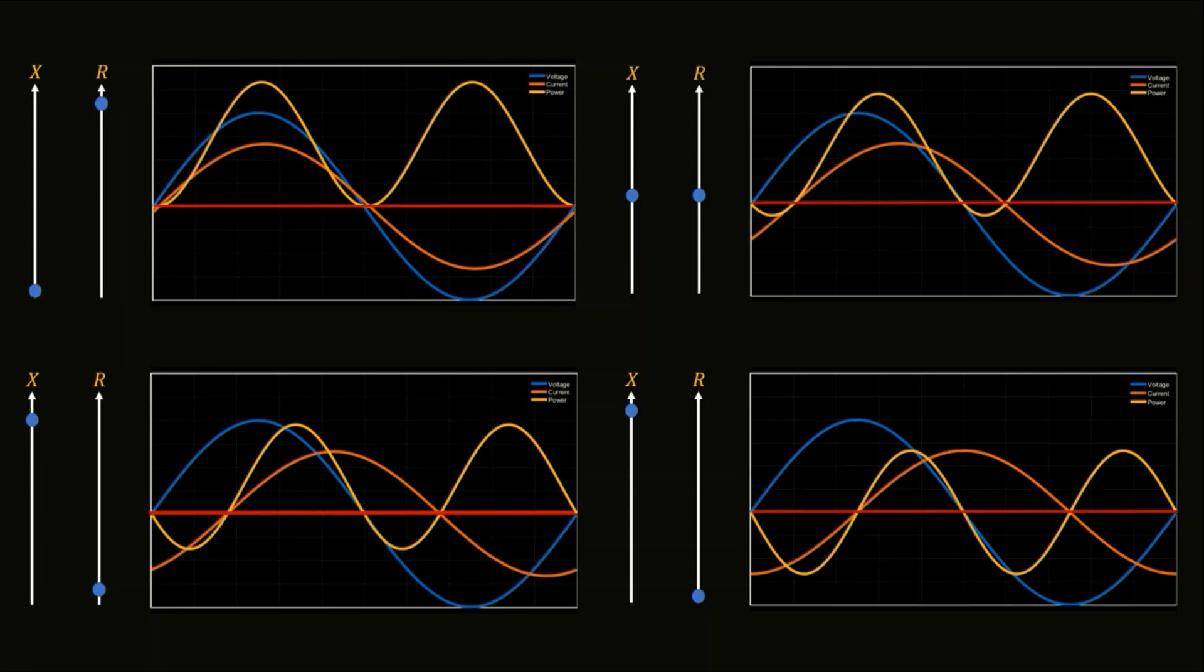If you observe at the second time instant or the second snapshot we see that some portion is being stored as reactive power because the value of X is increasing. If you look at the third instant then the value of X is increased further so more reactive power is being stored. In the final instant X is at its full value and R is zero so the whole energy is being stored as reactive power and sent back to the source.